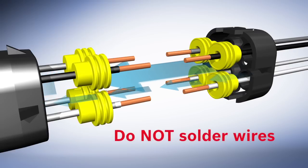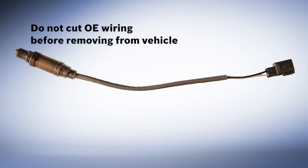Doing so will result in a malfunctioning sensor. Additionally, do not cut the original equipment wiring before removing the sensor from your vehicle because you will need to measure the full length of wire when preparing the new oxygen sensor.